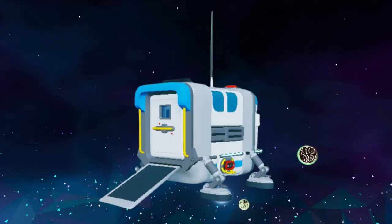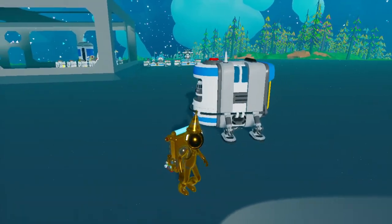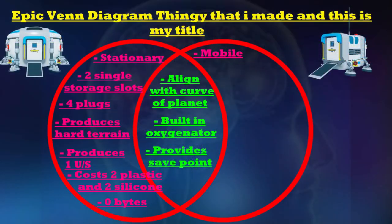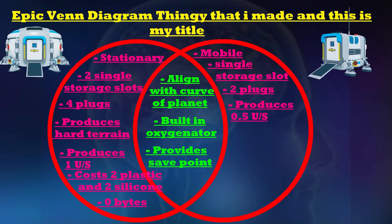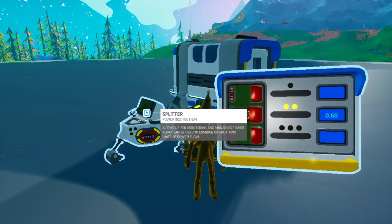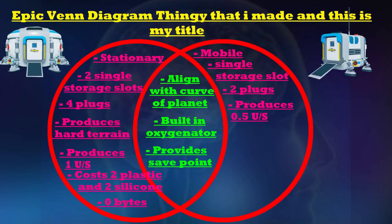Now we move on to the field shelter and discuss everything that is different from the shelter. It is mobile, which means you can move it around, whereas the shelter is completely stationary. It has one single storage spot — exactly half of the shelter — two connection plugs, exactly half of the shelter, and it puts out 0.5 units of power, also exactly half the shelter. Because it's mobile, it does sacrifice its storage, connection, and power output.